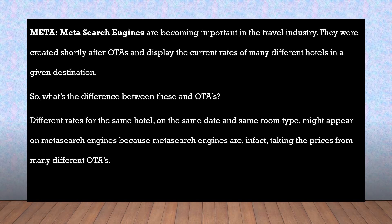Meta search engines are becoming important in the hospitality industry. They were created shortly after OTAs and display the current rates of many different hotels in a given destination. What's the difference between these and OTAs? Different rates for the same hotel, on the same date, on the same room type might appear on meta search engines.